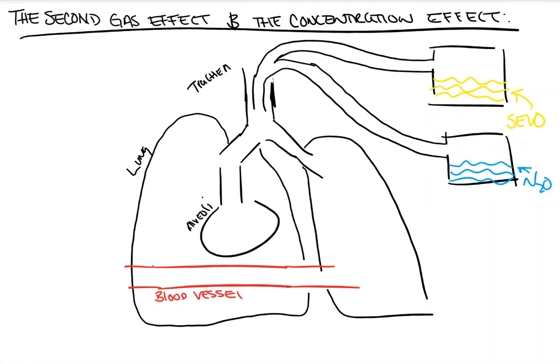So let's first start with the second gas effect. Here we have my crude diagram drawing as always. We have our lung or alveoli, the trachea is going to be up over here and it's going to be connected to our vaporizers that are going to pump in both sevo and our N2O or nitrous oxide, and we also have our blood vessel down here.